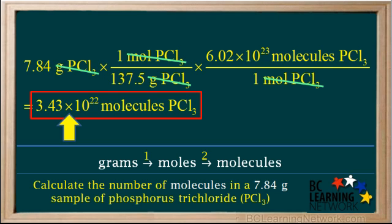The lowest number of significant figures in our question and conversion factors was 3, so our answer is rounded to 3 significant figures.